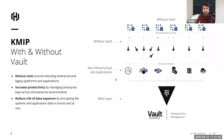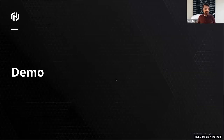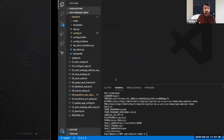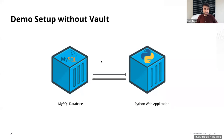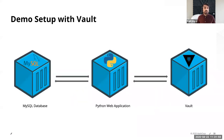Now let's go into the demo and see all these features working. I have an application running in a container — it's a Python web application — and a MySQL database also running as a container. This is the initial insecure setup where all sensitive data is stored in clear text. We'll then show how to use Vault to secure this application, secure the connection between MySQL and the application with dynamic secrets, and how Vault helps us encrypt the data in both standard and format-preserving ways.